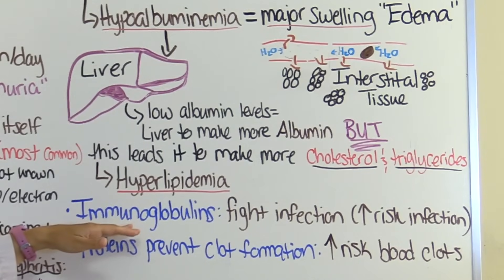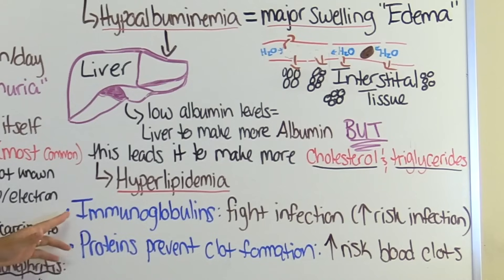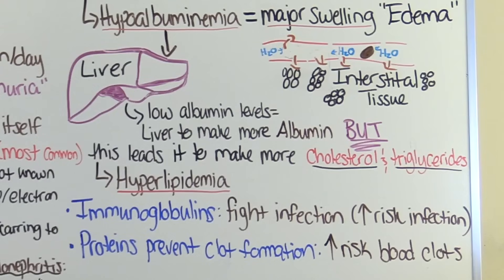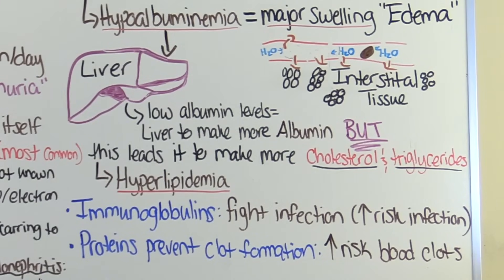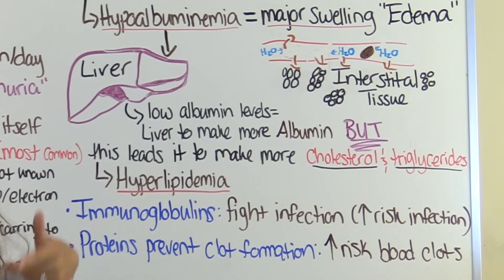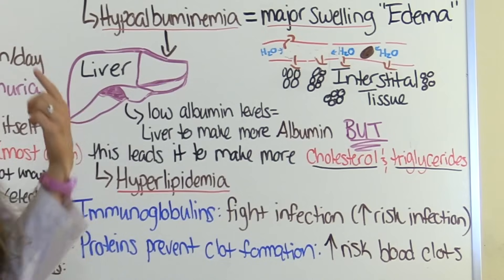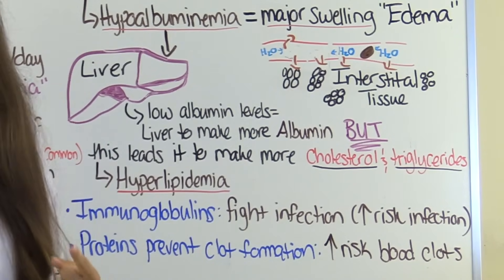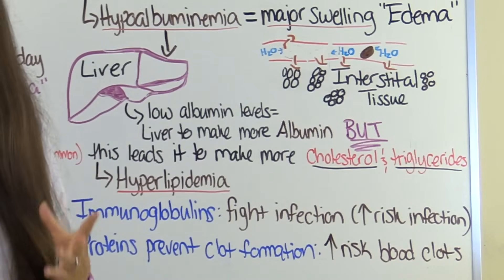Other proteins the patient can lose in the urine are immunoglobulins — proteins that help fight infection. This increases the patient's risk for infection because they've lost those immune system proteins. Additionally, some treatments for this condition, like corticosteroids, suppress the immune system, so it's a double whammy for these patients. As a nurse, you want to be thinking about risk for infection and your role in addressing that.